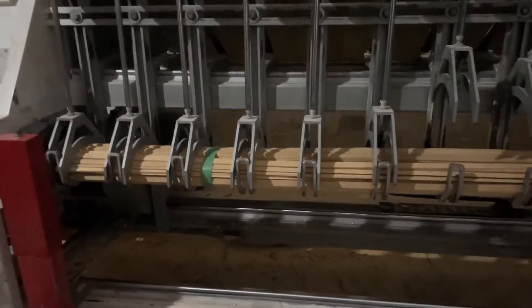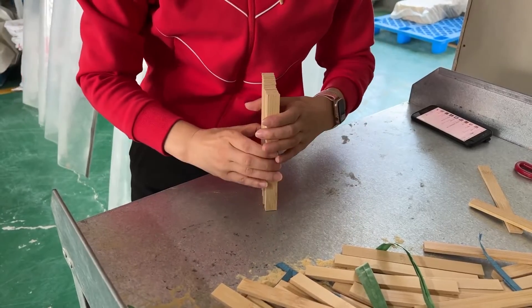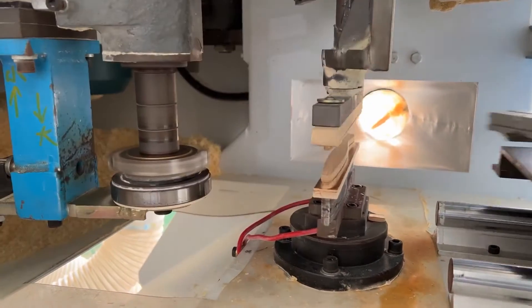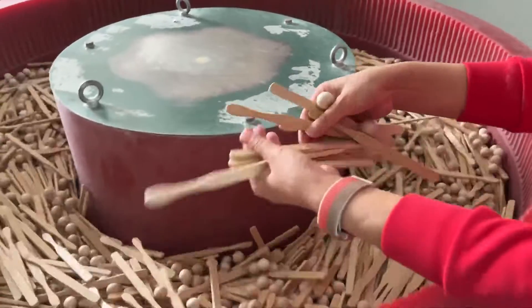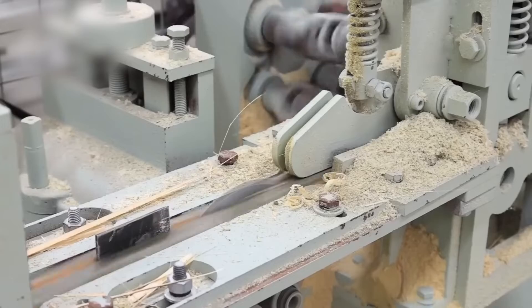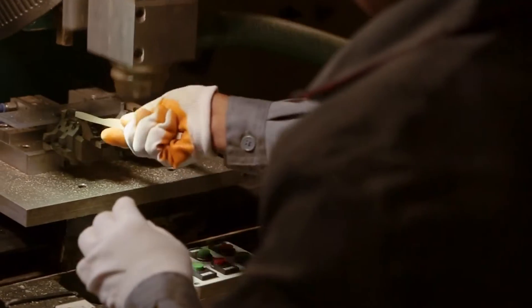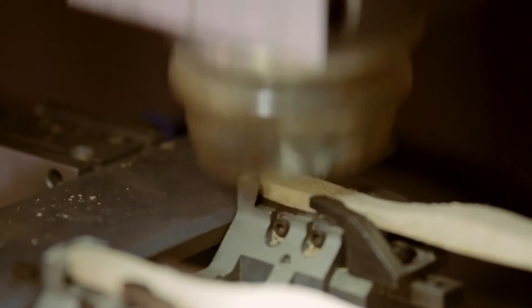The dried bamboo stalks are cut into smaller sections to create individual toothbrush handles. These handles are shaped into the desired form, usually resembling the typical design of a plastic toothbrush handle. The shaping process can involve cutting, carving, and sanding to achieve the desired size, shape, and smoothness. Finally, the process is completed by making holes at the end of the bamboo handles to accommodate the bristles.